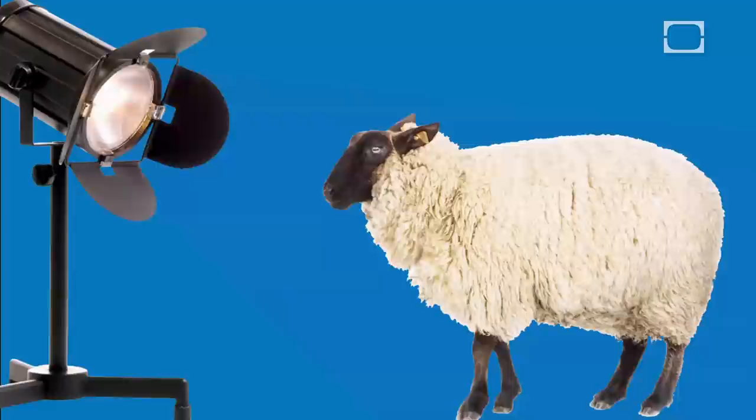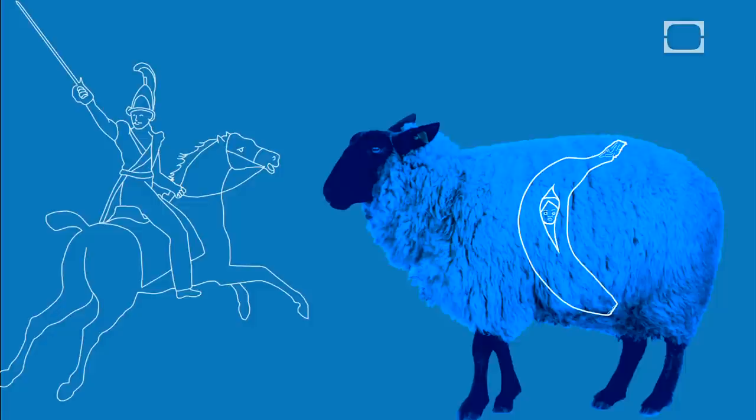Exposing this coated surface to ultraviolet light with a negative image will create a positive image on the surface and also create a permanent blue dye called Prussian blue. This exposure is what gives blueprints their unique tint.